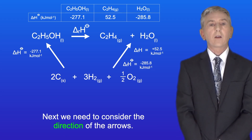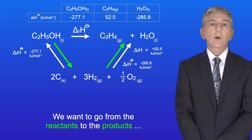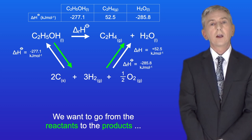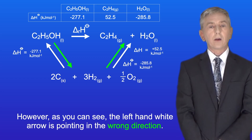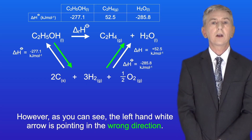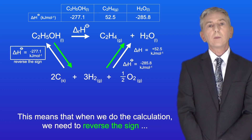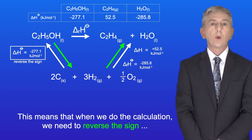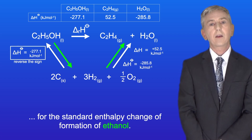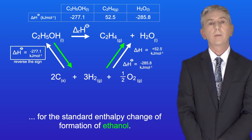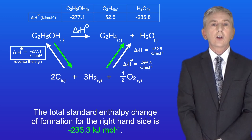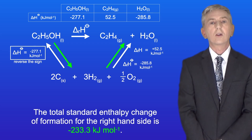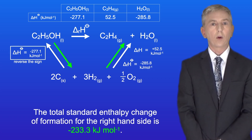Next, we need to consider the direction of the arrows. We want to go from the reactants to the products, in other words the direction I'm showing you here. However, the left-hand white arrow is pointing in the wrong direction. This means that when we do the calculation, we need to reverse the sign for the standard enthalpy change of formation of ethanol. The total standard enthalpy change of formation for the right-hand side is minus 233.3 kJ per mole.